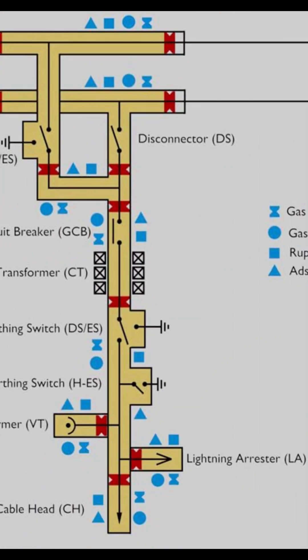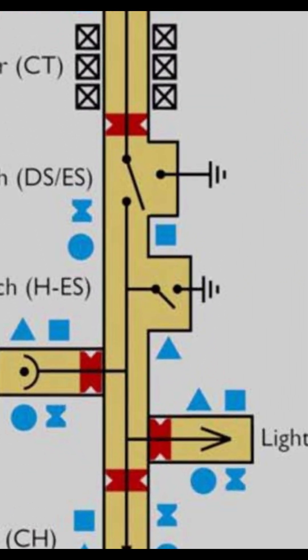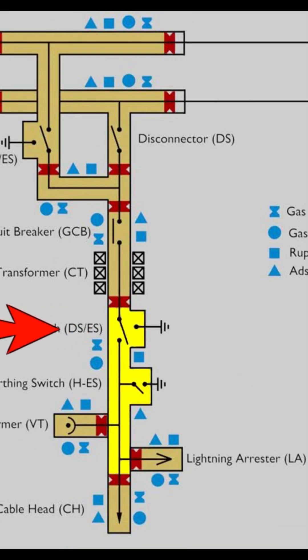Next, there is another compartment. This compartment contains two earth switches and one disconnector. This disconnector or isolator will isolate this circuit breaker along with the current transformer from the line or feeder.